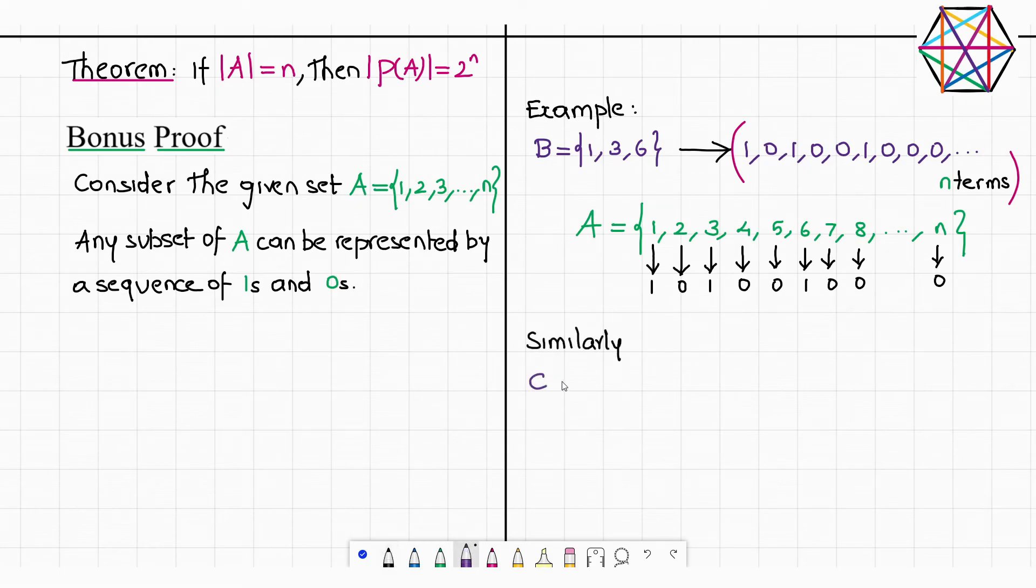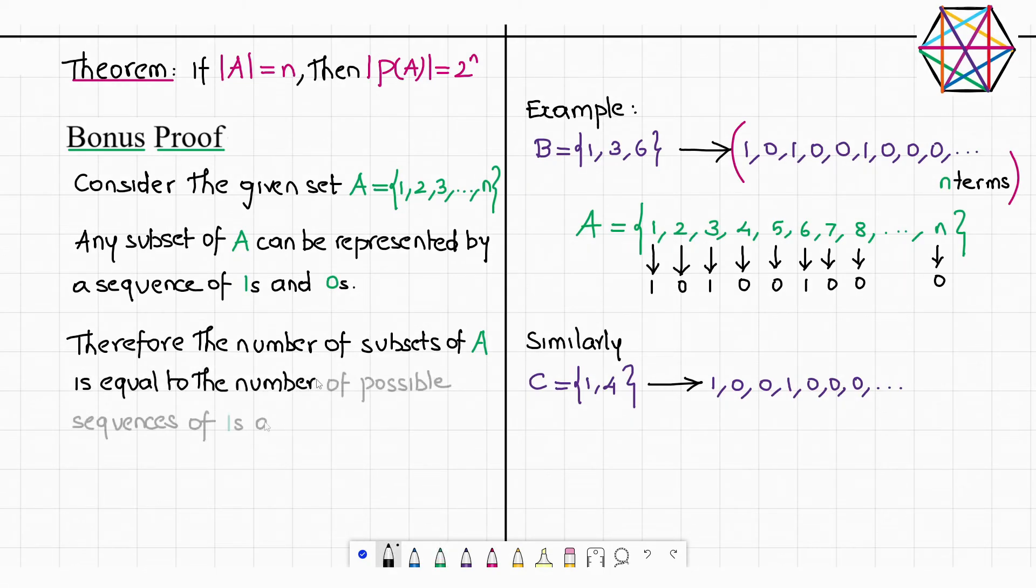So similarly, consider this set {1, 4}. This can be represented by the sequence 1, 0, 0, 1. Rest all are 0s. Now you got the idea, right? Therefore the number of subsets of A is equal to the number of possible sequences of 1s and 0s of length n.